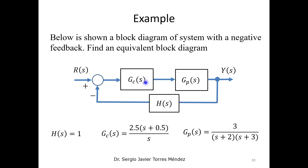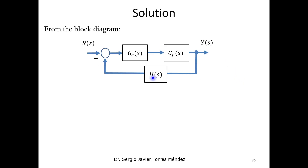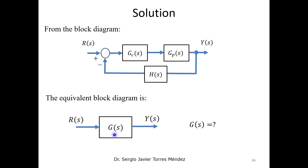Another common example includes a block diagram with a controller. Suppose we have a closed-loop block diagram with feedback — including a sensor, a reference input, a transfer function for the plant or process, a controller, and an output. With these transfer functions, we often need to find an equivalent block diagram that only relates the reference to the output.